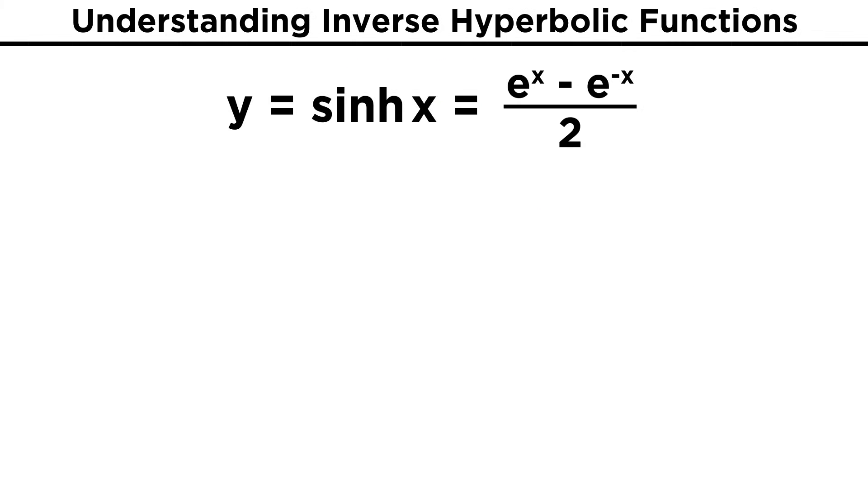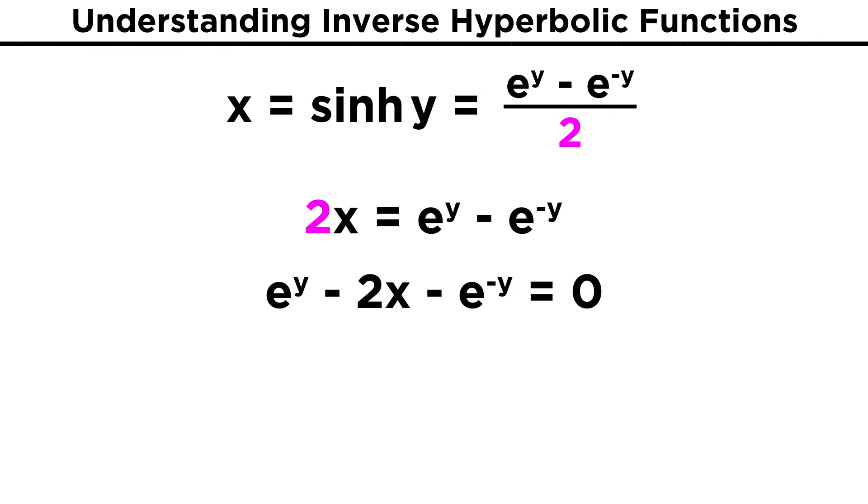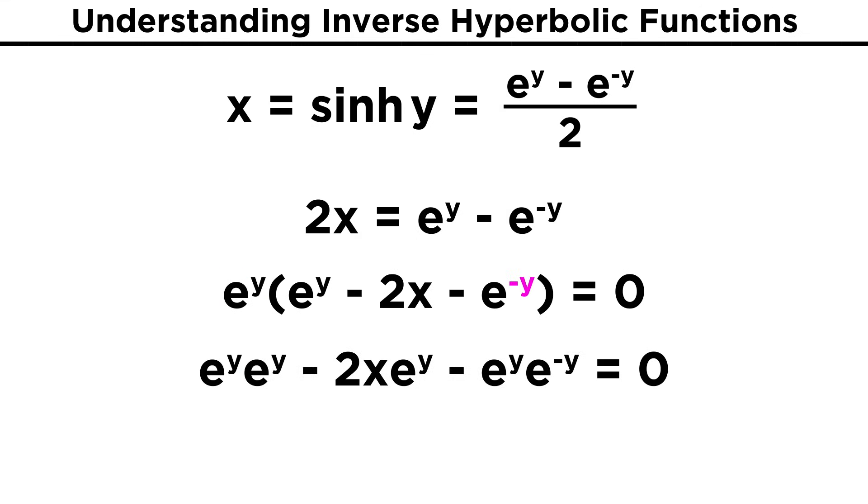If we want to express the inverse hyperbolic functions in terms of x, we can swap x and y, and then solve for y, as we are used to. See how we bring the two up here, then multiply through by e to the y to get rid of that negative exponent, since e to the y times e to the negative y is one.